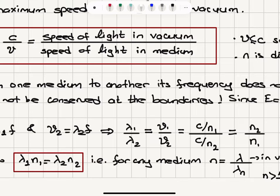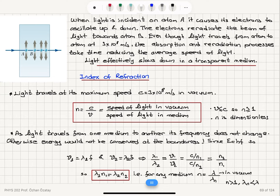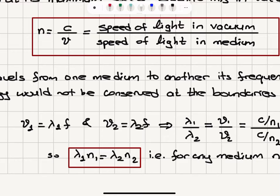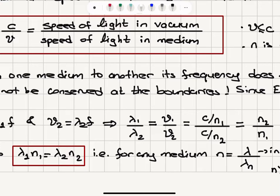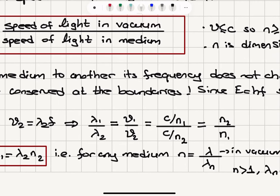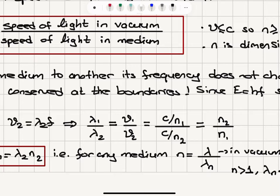V1 is C divided by n1 and V2 is C divided by n2, so V1 over V2 equals n2 over n1. Therefore lambda 1 times n1 equals lambda 2 times n2. The wavelength changes to accompany the change in speed, but the frequency stays the same. For any medium of index of refraction n, lambda in vacuum divided by lambda in that medium equals n. So when light enters a medium from vacuum, it slows down and its wavelength decreases.